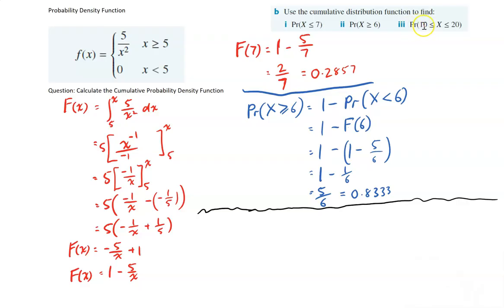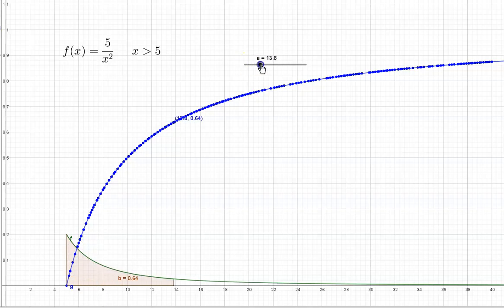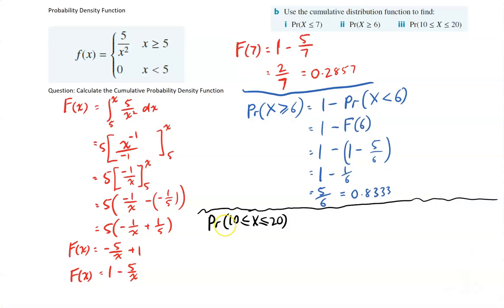Finally, for this last example, we're going to do the probability being between 10 and 20. On our graph, 20 is over here, and 10 is back here. So all we need to do is find this number for 10, that number for 20, and subtract one from the other. So the probability that x is between 10 and 20 is equal to f of 20 minus f of 10.